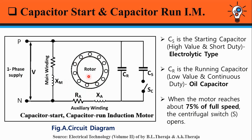According to Faraday's law of electromagnetic induction, an EMF is induced in the rotor conductors. The rotor being a closed circuit, current flows through it and a force is exerted on the rotor conductors. Torque is developed and the rotor starts to rotate. When a particular speed is attained, the centrifugal switch SC opens and the capacitor CS gets disconnected from the circuit.